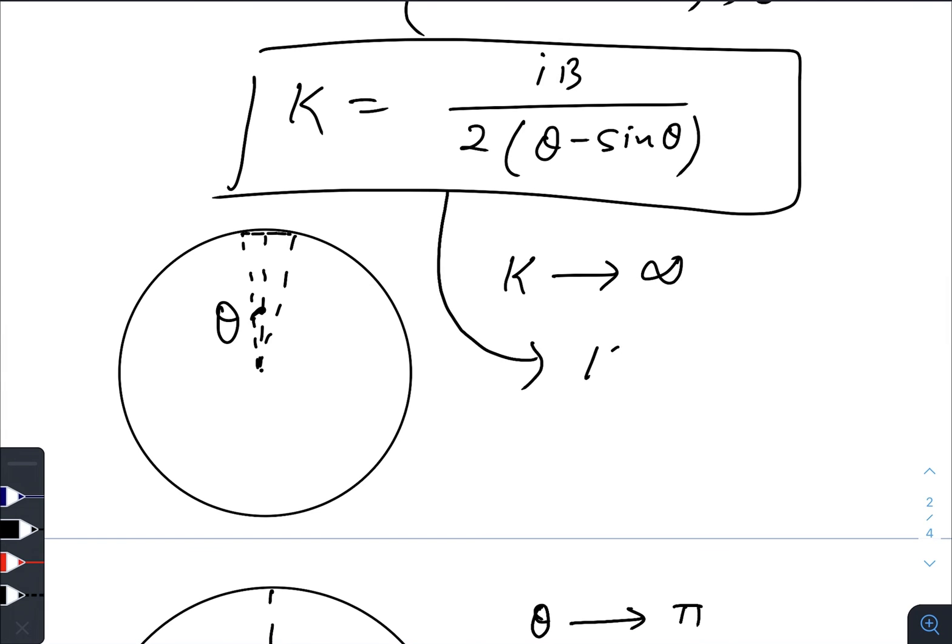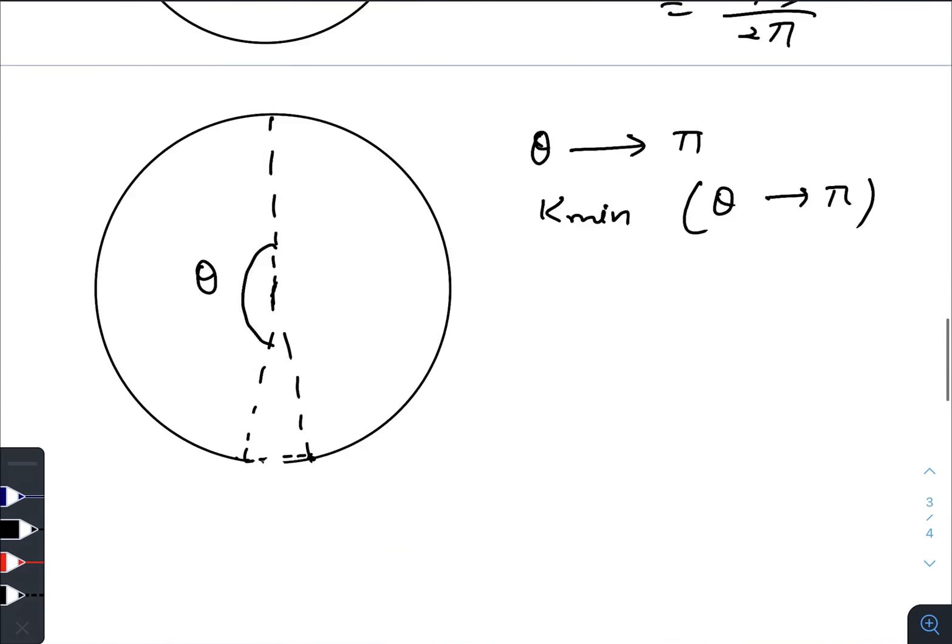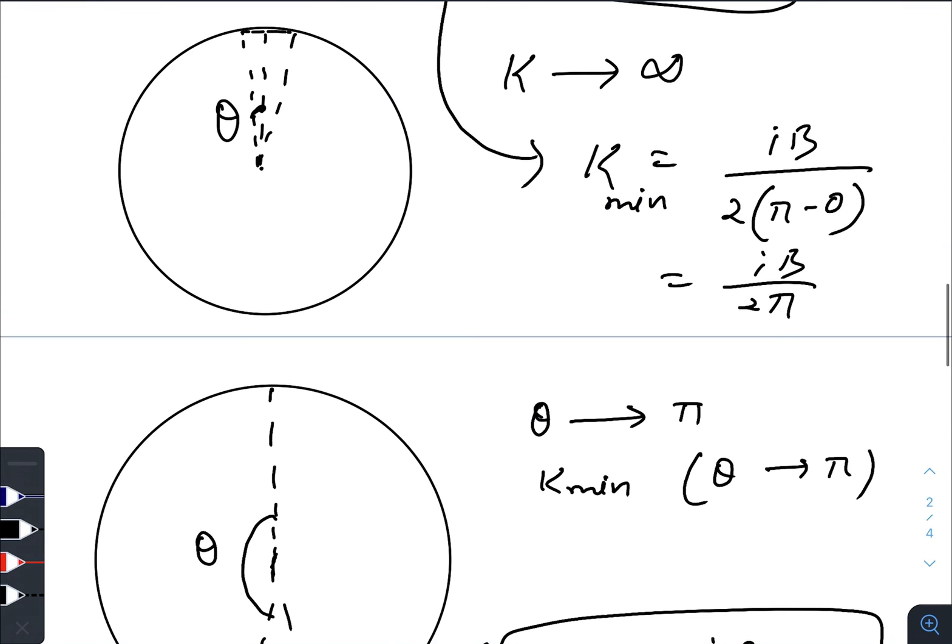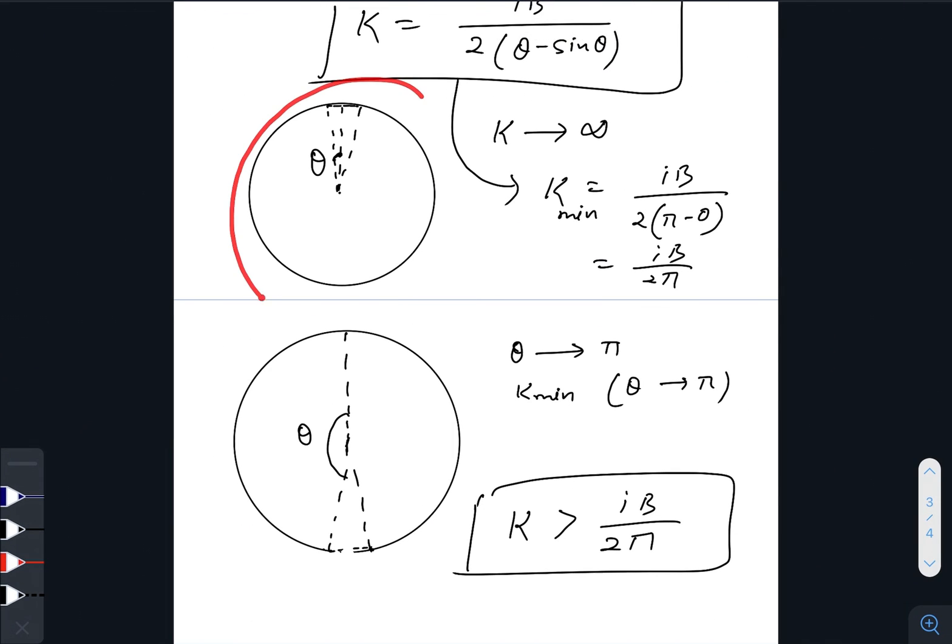We just put the value of theta in this solution. We will get k_min equals IB divided by 2(π - 0), so that is IB divided by 2π. So the value of k must be greater than IB divided by 2π and k can be increased till infinity. These are the two extreme situations as you can see.